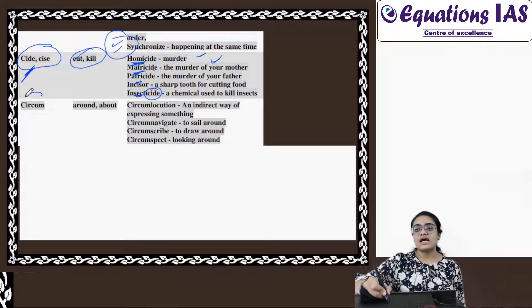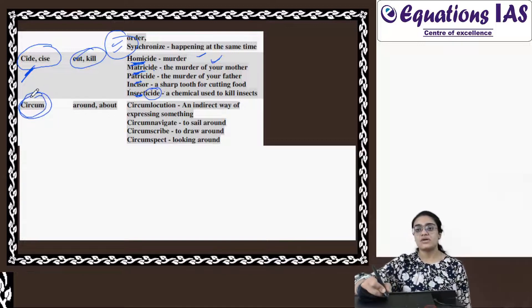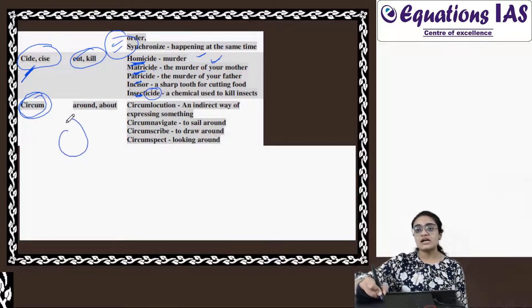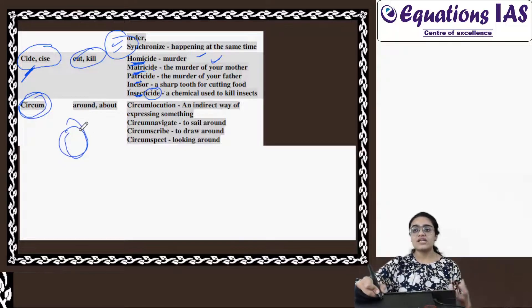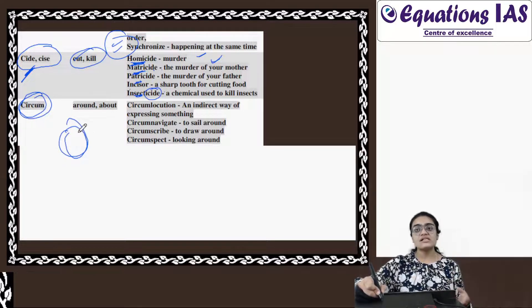Then our last one for today - Circum. Circum, circle, circumference - do you remember? Circum is circumference. Circle se related hai - gol. So it is around and about, gol us tarah mein.